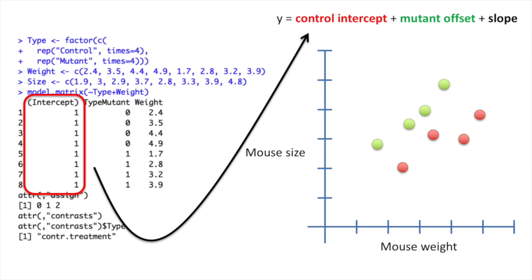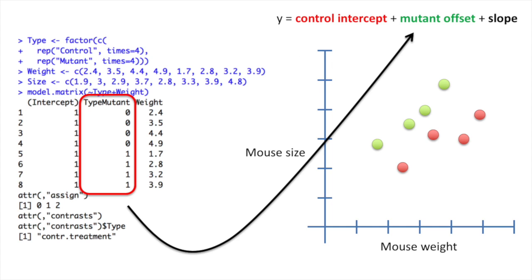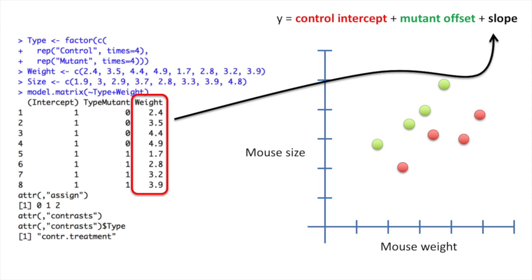The first column in the design matrix will be multiplied by the control intercept. In this case, the control intercept will be ON for all of the measurements. The second column in the design matrix will be multiplied by the mutant offset. In this case, only the mutant values will turn the mutant offset ON. The last column in the design matrix will be multiplied by the slope.